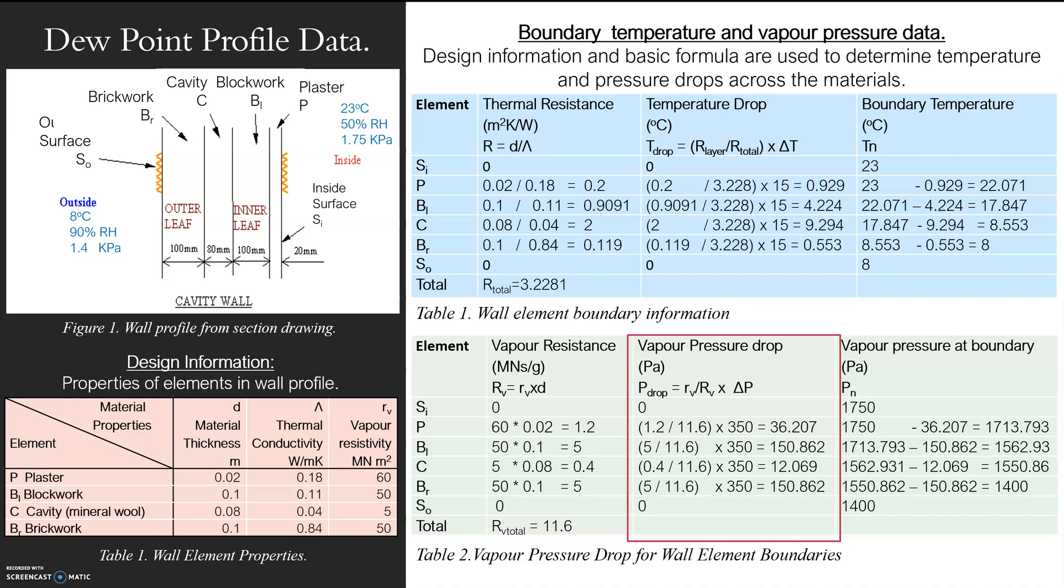And that's my figure there, 36.207. And again, what you should find is if you add up all of these pressure drops, they should add up to 350 because the pressure drop between inside and outside is actually 350 Pa. Which is so 1.75 kPa is 1,750, 1.4 kPa is 1,400. To make sure they add up to 350. Lovely.